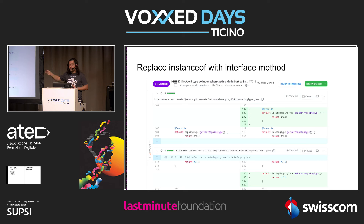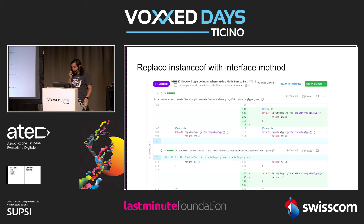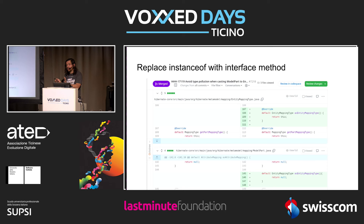Another solution, taken from Hibernate: the Hibernate developers knew each entity implemented a single supertype, so they added a virtual method called asEntityMappingType(). If the object is an instance of that type, return this; otherwise return null. So instead of doing instanceof, you call this method and check whether the result is null. It achieves instanceof on an interface without actually doing an instanceof — a clever trick.